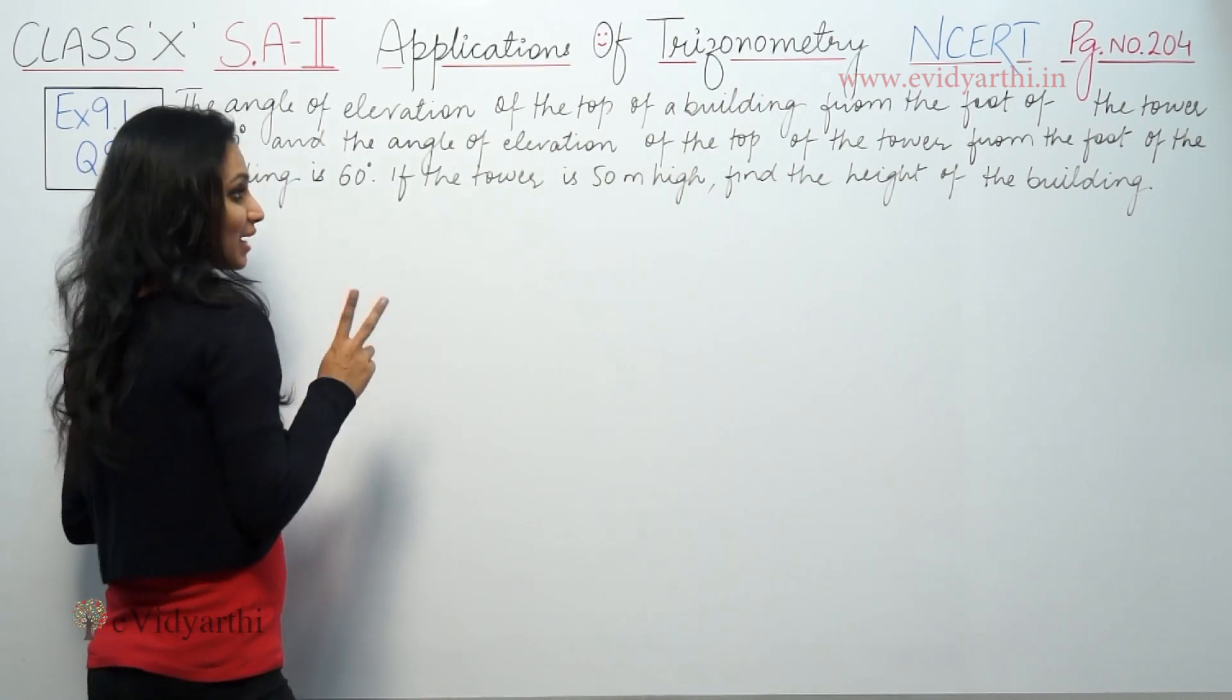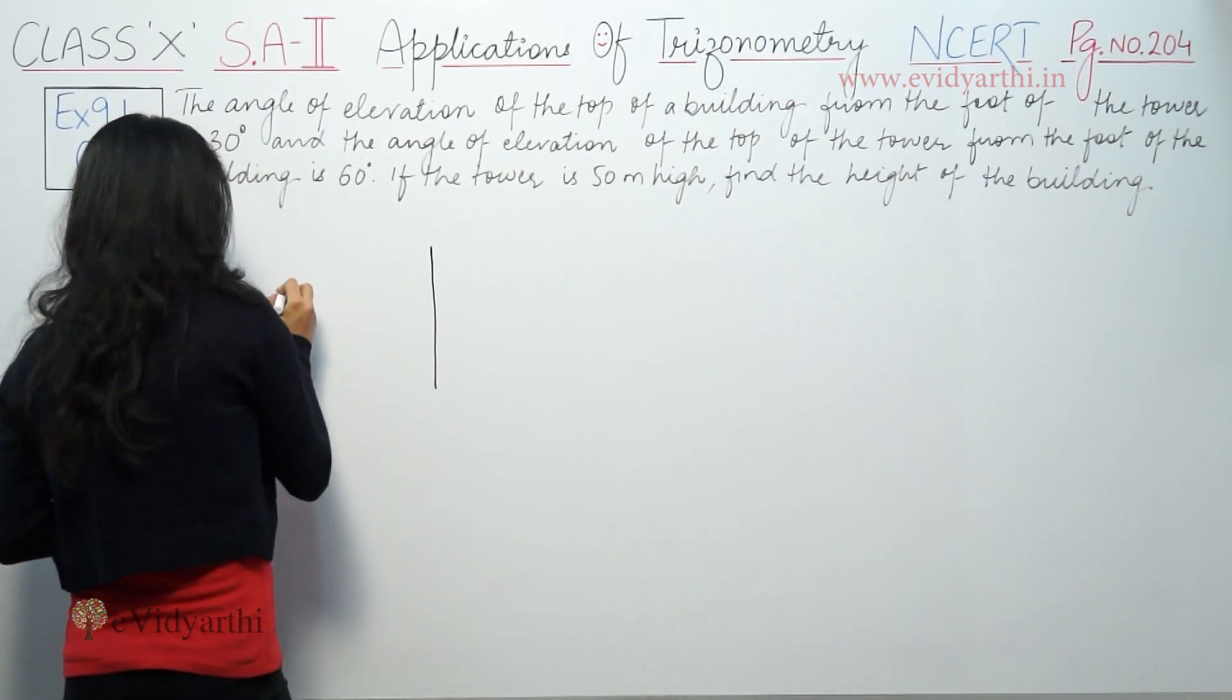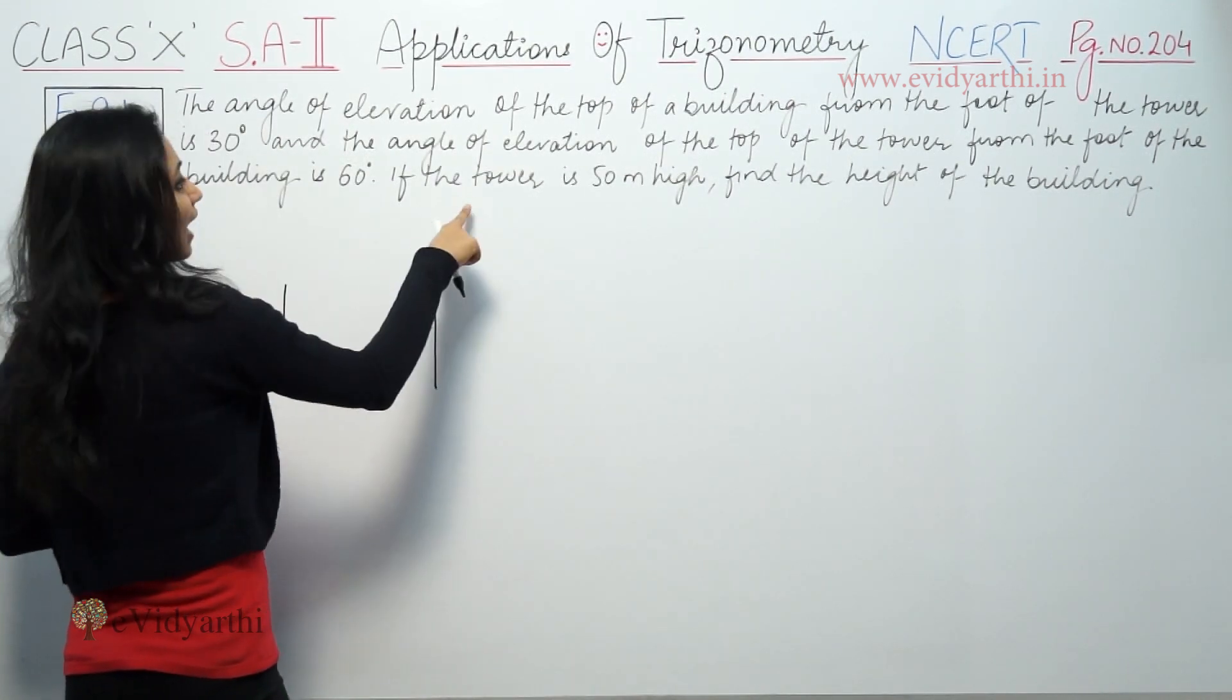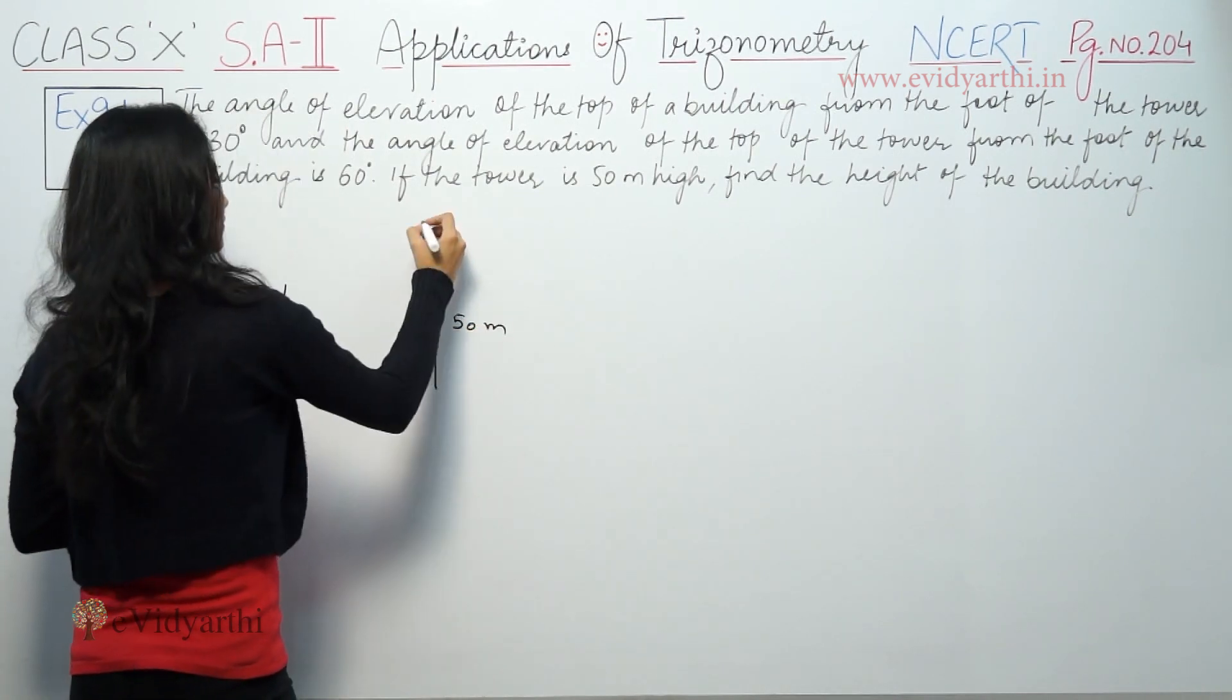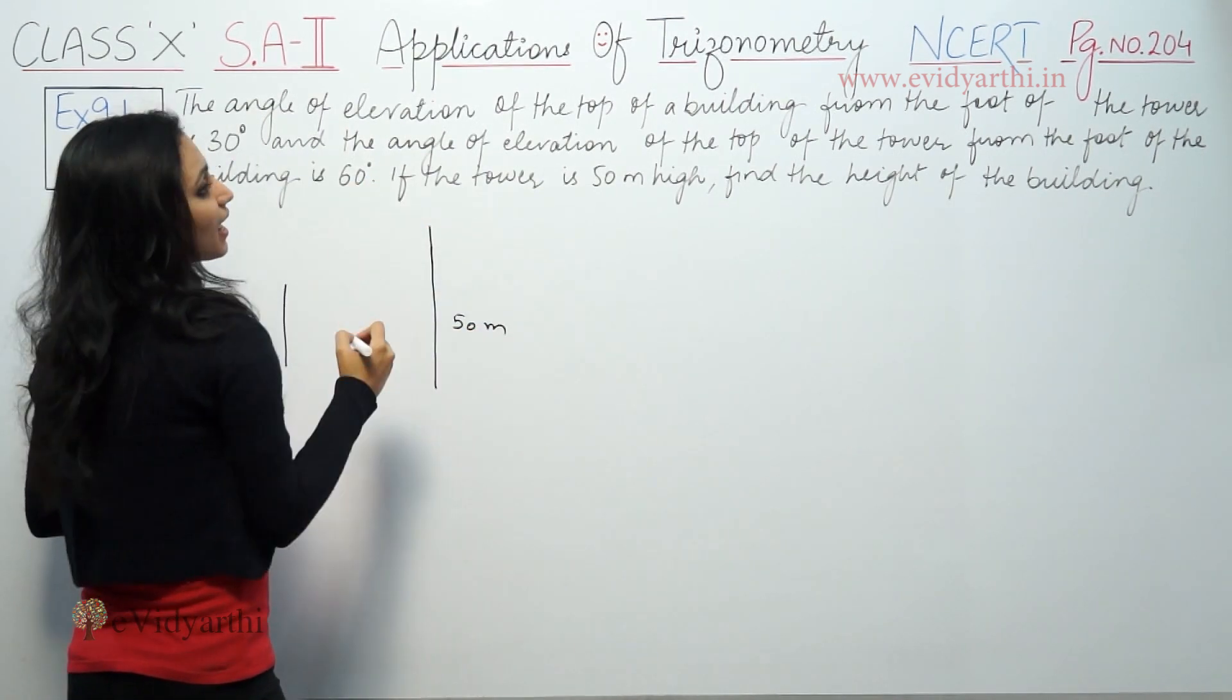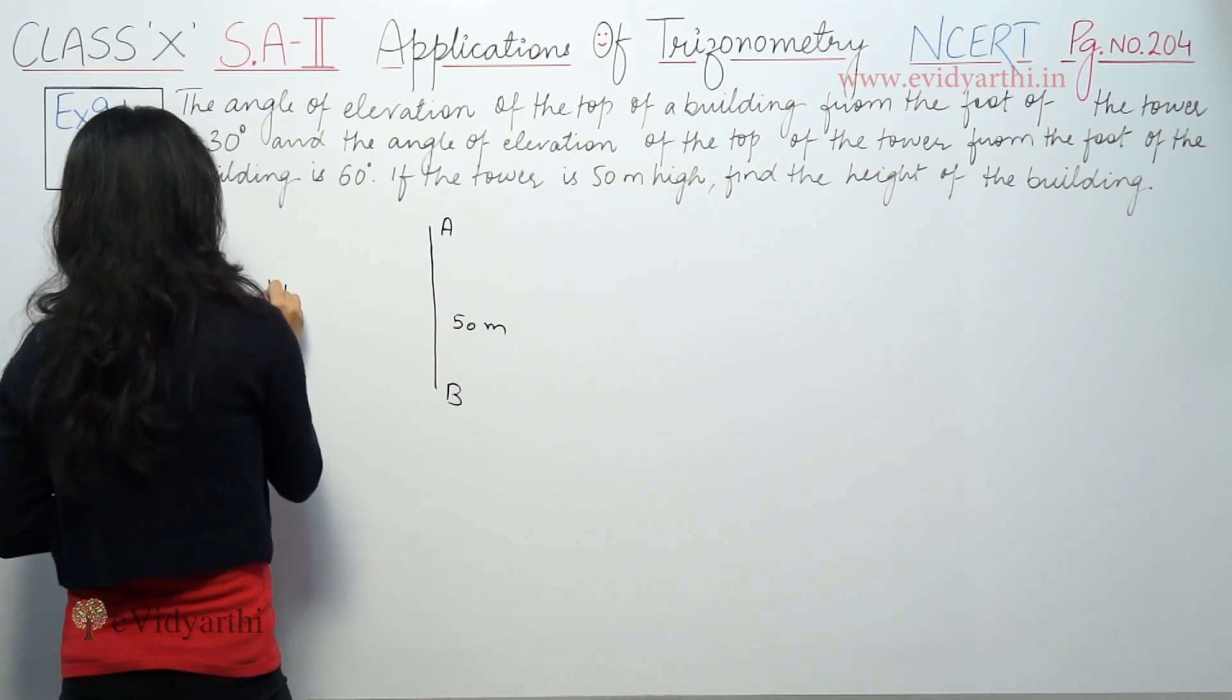So two things are given: a building and a tower. The building is taller. The tower's height is 50 meters. Let's suppose the tower is AB and let me label point D.